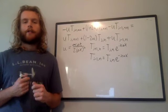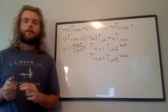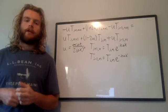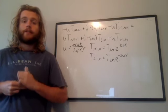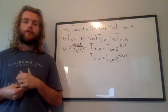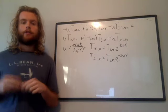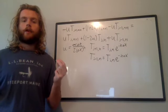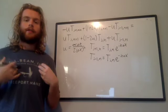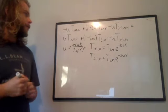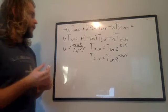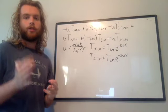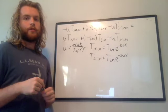Hello everyone, welcome back to another video. Today we are going to be performing a von Neumann stability analysis on the Crank-Nicholson implicit differencing method that we use to model how heat diffuses through a bar when you begin heating it from two ends, which we did in the last video. Today we are going to use the von Neumann stability analysis to show why stability is not going to be an issue when you use the Crank-Nicholson method.